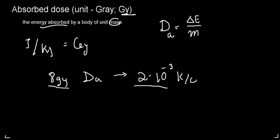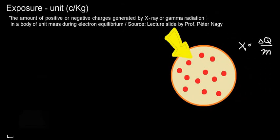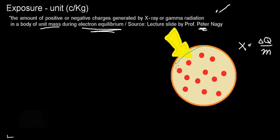This makes it necessary to gain another perspective, which leads to the next physical concept: exposure. The best definition from Professor Peter's presentation is: the amount of positive or negative charges generated by x-ray or gamma radiation in a body of unit mass during electron equilibrium.